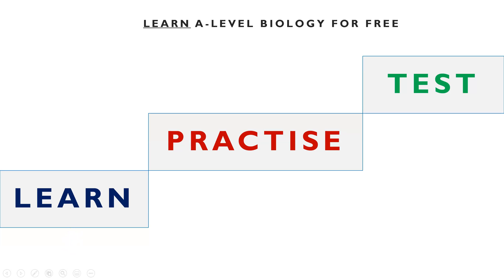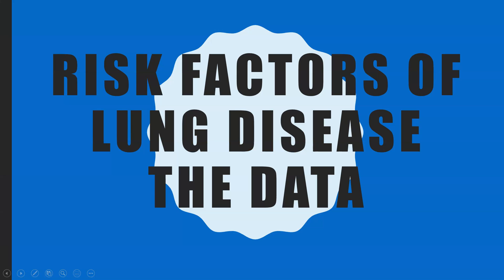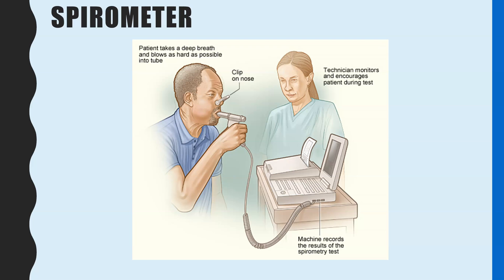Hello everyone and welcome to Learn A-Level Biology for free with Ms Estrick. In this video we're going to be looking at a skills set which is looking at the risk factors of lung disease and the data associated with that. All of the things we're going to go through today, you don't need to know on the AQA specification, but it's all in the extra bit where it says students should be able to interpret information or data on these topics. So you're expected to be familiar with them, or if AQA were to give you a paragraph of information or a graph, you could apply your knowledge to that.